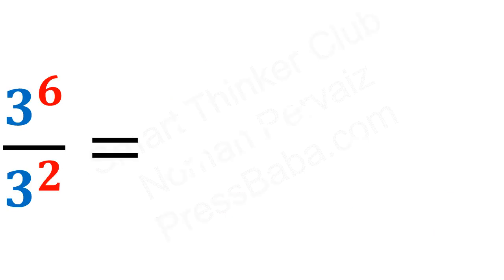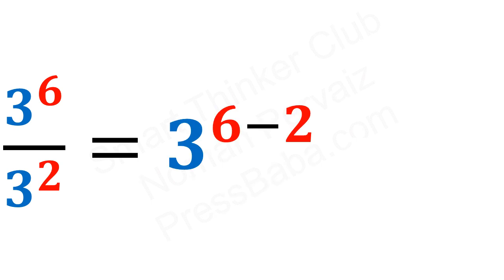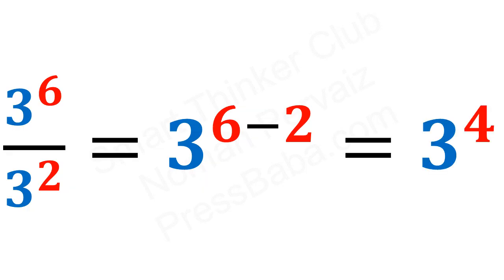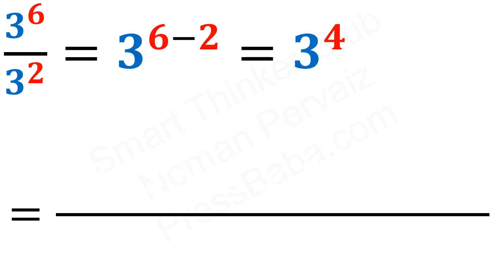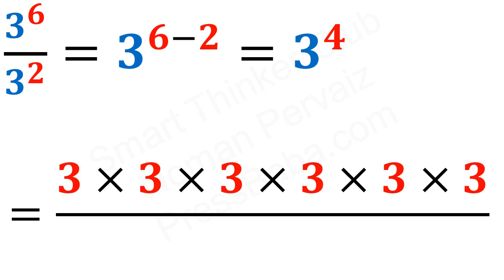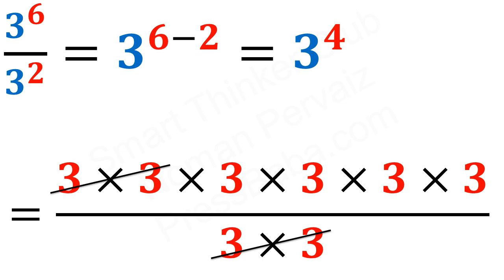Consider another example: 3 raised to the power 6 divided by 3 raised to the power 2. By applying the quotient rule, it becomes 3 raised to the power 6 minus 2. Here, 3 comes as it is and 6 minus 2 is 4, so we have 3 raised to the power 4. We can also verify this using the exponent rule — 3 raised to the power 6 means multiply 3 six times, and in the denominator 3 raised to the power 2 means multiply 3 twice. The two 3s in the denominator cancel with two in the numerator, leaving 3 multiplied four times, which is 3 raised to the power 4.